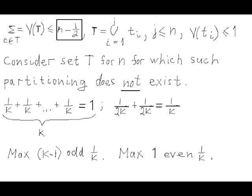The next step is, in this set T for n, for which the described partitioning does not exist, let's replace all subsets of k coins with denomination 1/k with one coin of denomination 1 in this entire set. And also, let's find all pairs of coins with denomination 1 over 2k, and replace them with one coin 1 over k. The result will be the new set with the same total value, but it is certain that in this resulting set, the maximum number of coins with denomination 1 over k will be k minus 1, and the maximum number of coins with denomination 1 over even number will be 1.